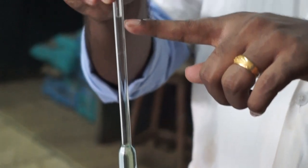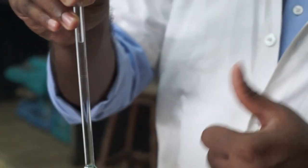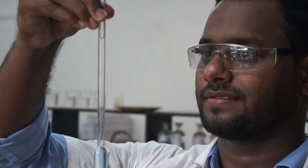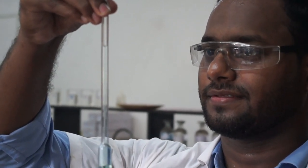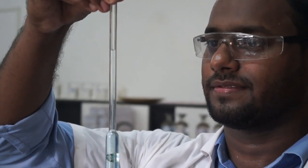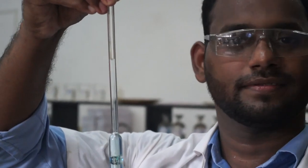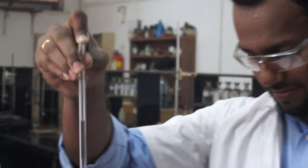Once the solution comes above the calibration mark, remove the rubber bulb and place your index finger on it. Now you need to adjust the lower meniscus on the calibration mark. It requires a lot of practice to master this technique.